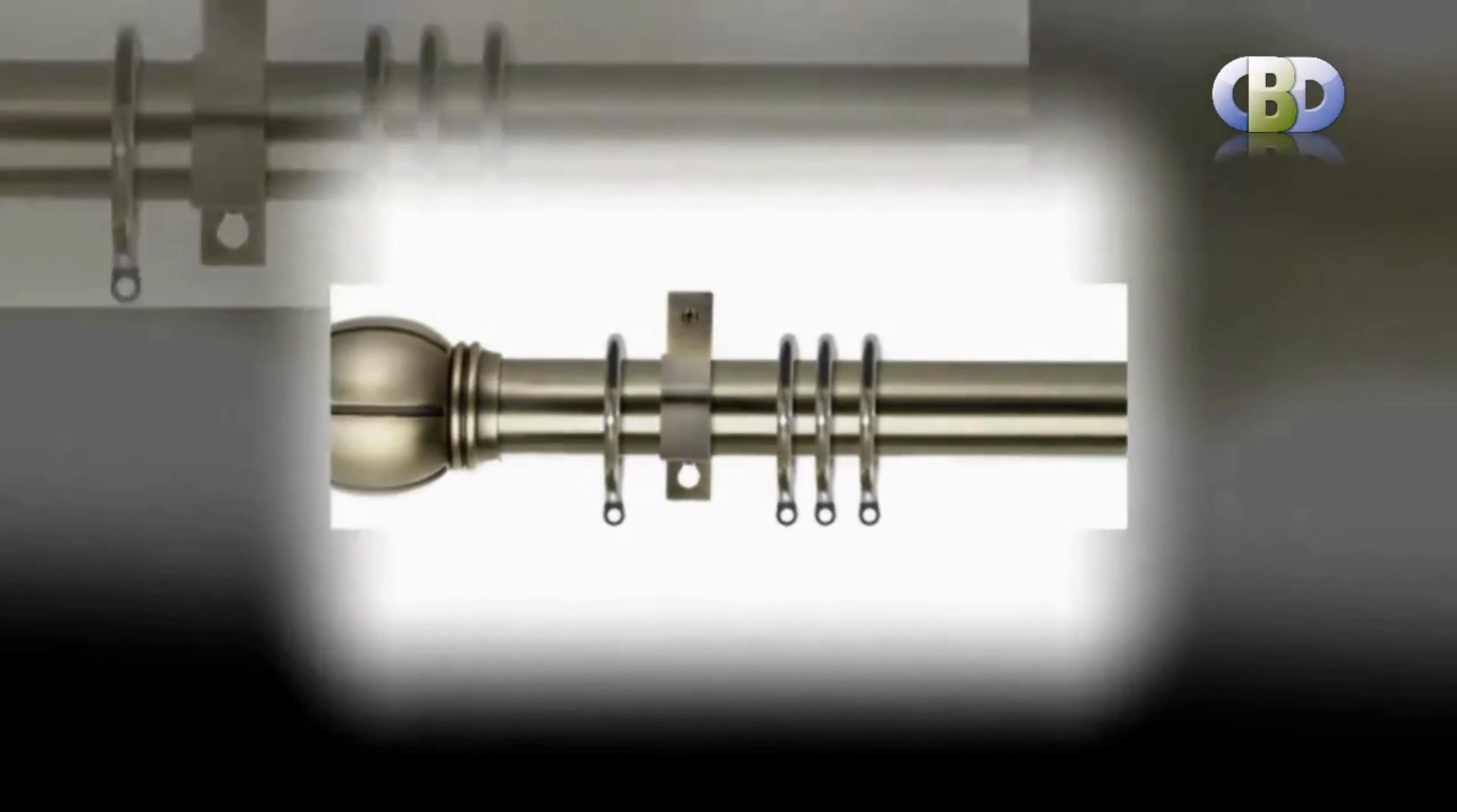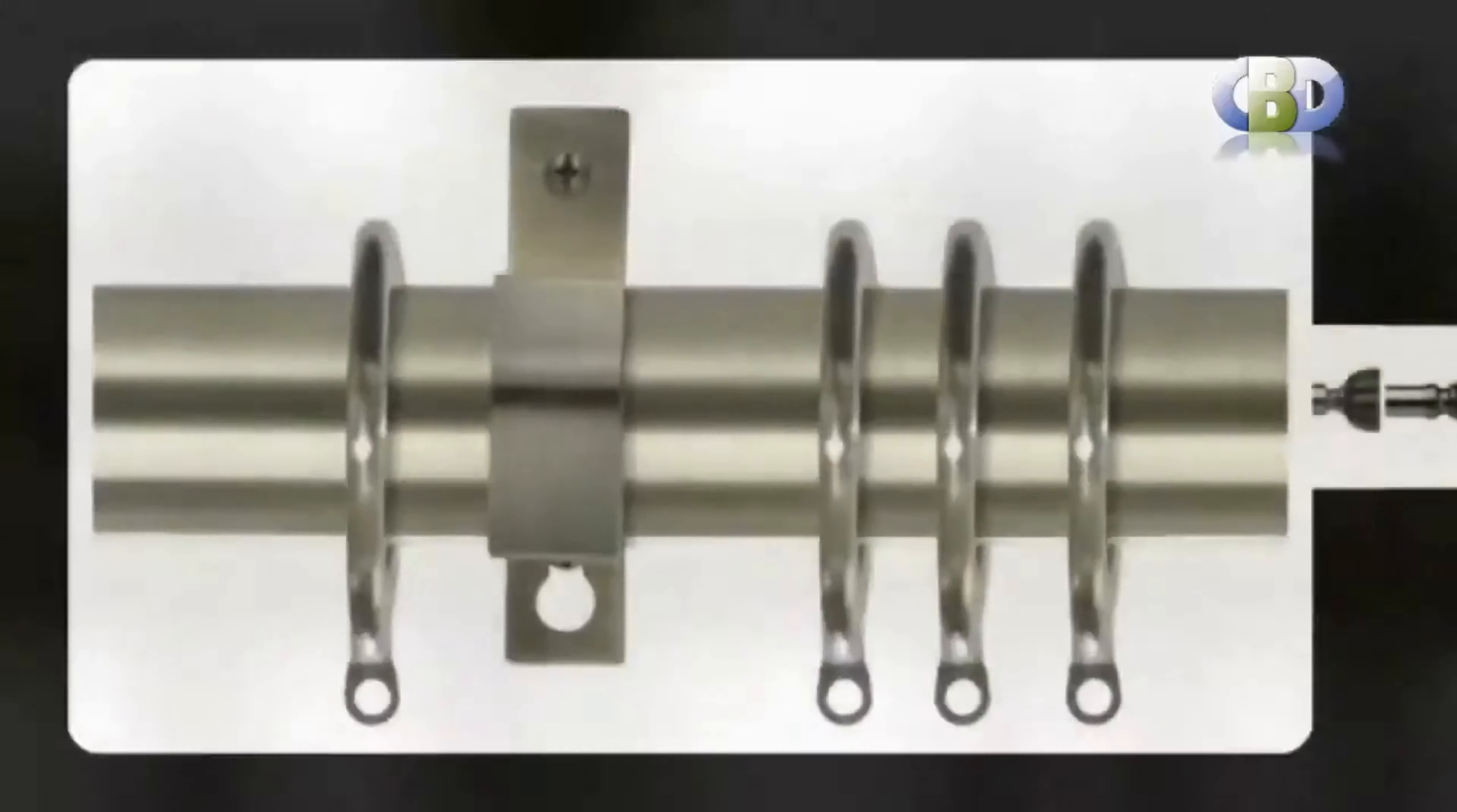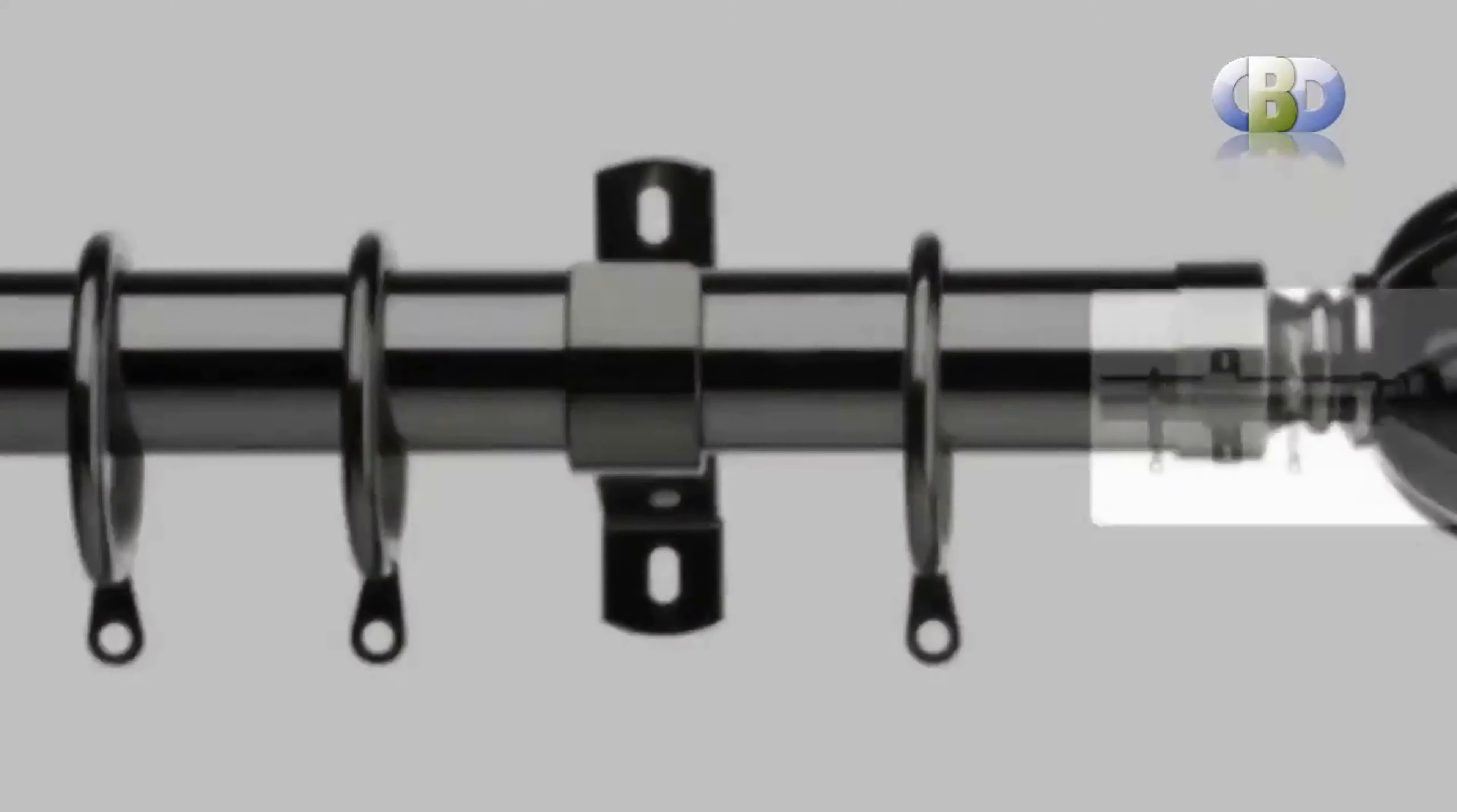Whether it's pole sets or mix and match, you're sure to find the perfect curtain pole here. In addition to standard poles we have poles without rings for tab top or eyelet curtains, extendable poles which are so easy to fit, and Polaris, the superb unicord corded pole by Swish.